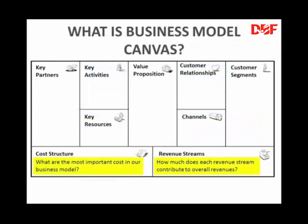Revenue streams: how do you make money? Write down all streams of revenue into your organization. For instance, sales of products, sales of fixed assets, membership fees — all revenue generated, put it down. Later on, we will see how to work out those revenue streams.